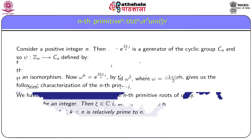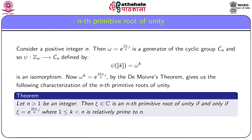We have the following characterization of the primitive nth roots of unity: e^(2kπi/n) is a primitive nth root of unity if and only if k is a positive integer less than n which is relatively prime to n. We prove this using isomorphism. Recall the result that in the cyclic group Z_n, an element [k] is a generator of Z_n if and only if k is relatively prime to n.